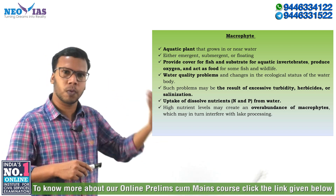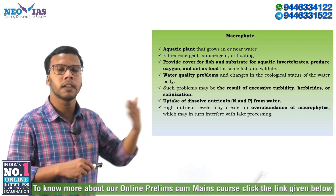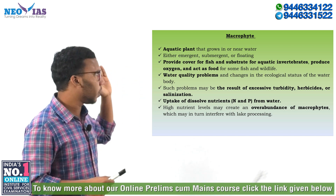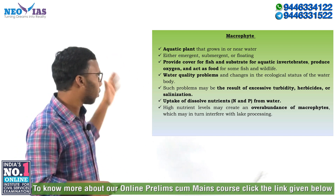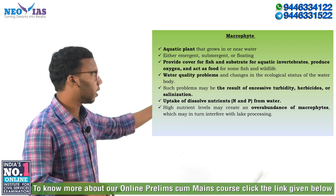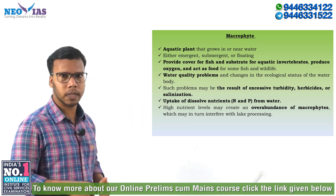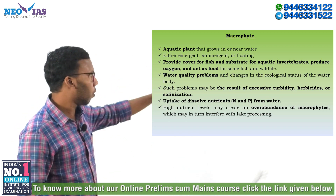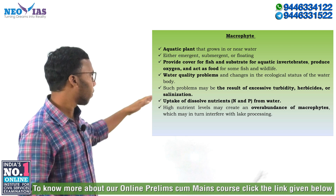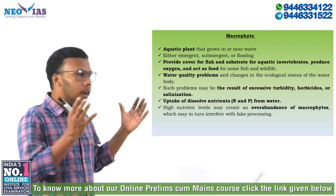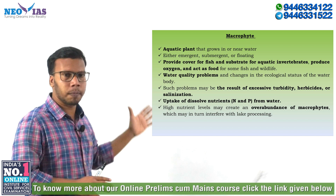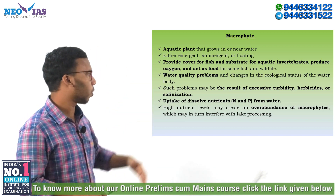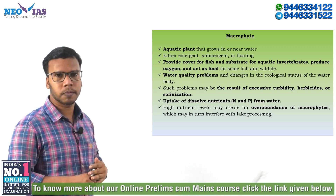Over-abundance of macrophytes can utilize nutrients that are available for other living organisms, disturbing the ecology. A decline in macrophytes may result from excessive turbidity, heavy sediments, or salinization. One important function performed by macrophytes is the uptake of dissolved nutrients — nitrogen and phosphorus — from the water, and overly high nutrient levels may in turn interfere with lake ecology.